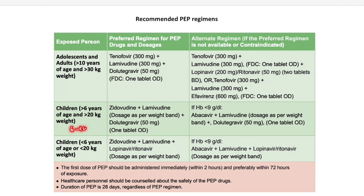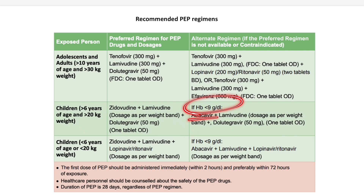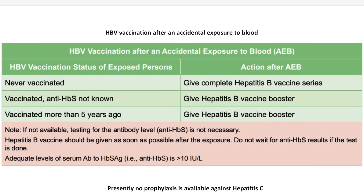The dosages of the preferred regimen are mentioned in the guidelines; there are alternate regimens as well. For children aged 6 to 10 years or weight 20 to 30 kg, and for those under 6 years or under 20 kg, dosage depends on the weight band. The drugs for younger children are Zidovudine + Lamivudine + Dolutegravir, or Zidovudine + Lamivudine + Lopinavir. In anemic patients, since Zidovudine causes bone marrow suppression, it is changed to Abacavir. The PEP regimen should be given for 28 days.